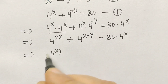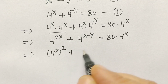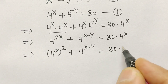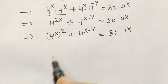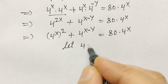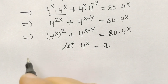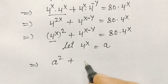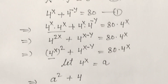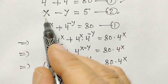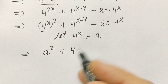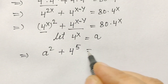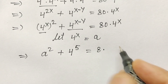This simplifies to 4 to the power 2x plus 4 to the power x minus y is equal to 80 into 4 to the power x. We can write 4 to the power 2x as (4 to the power x) squared. Let 4 to the power x equal to a. Since x minus y equals 5, we can write 4 to the power x minus y as 4 to the power 5, which equals 1024. So we have: a squared plus 4 to the power 5 is equal to 80 times a.